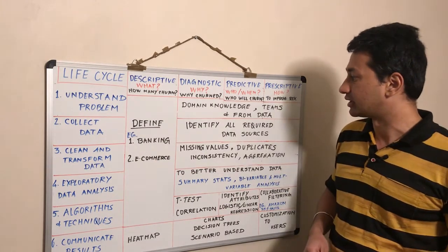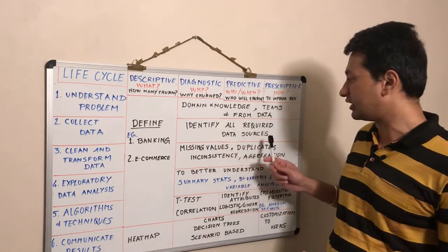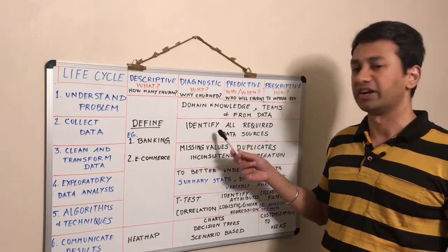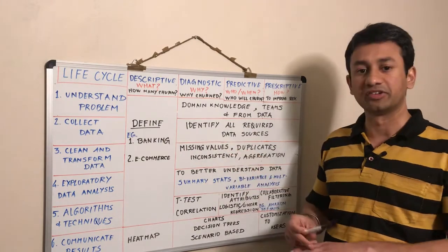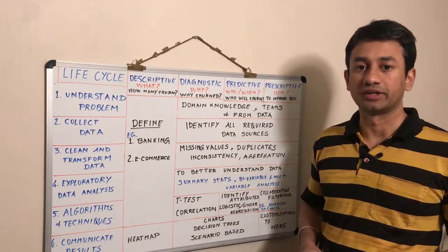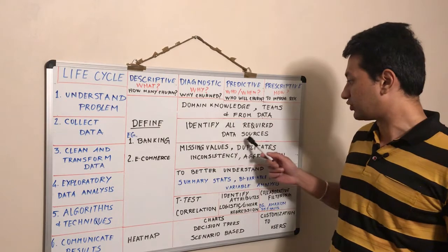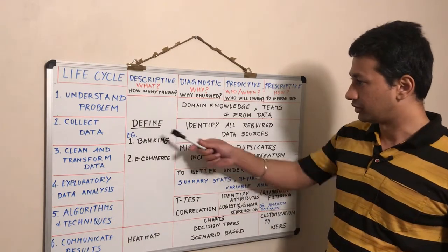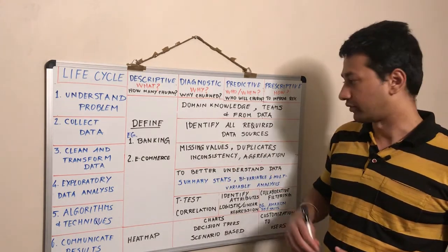The second step is collecting the data. Based on all the inputs that we have, it is really important to identify all the required data sources. In a practical example, the data might reside in different systems. For example, in e-commerce, billing might be a separate system, whereas customer interactions and complaint lines might be a separate system. There could also be some external data like social media — Twitter, Facebook, all the comments. So it's really important to understand the different data sources involved and, depending upon the problem, which sources are really important for us.